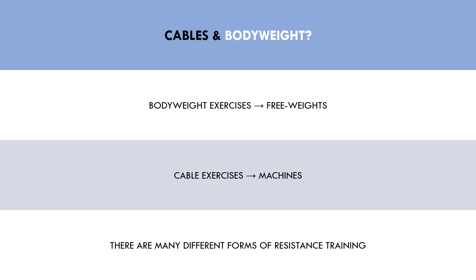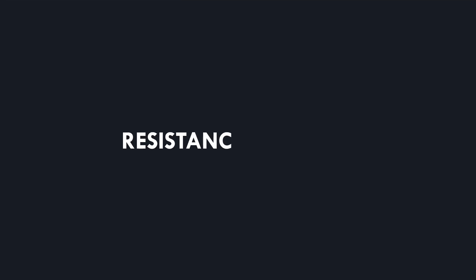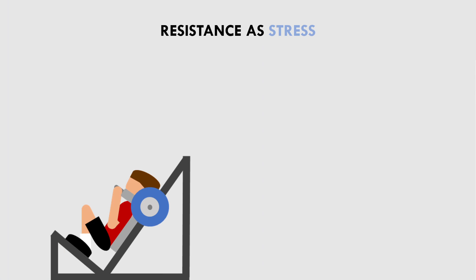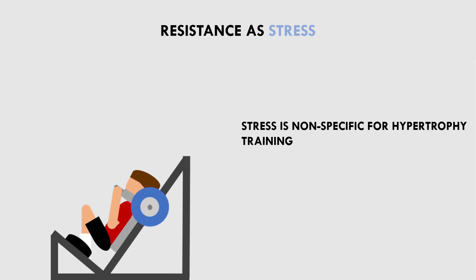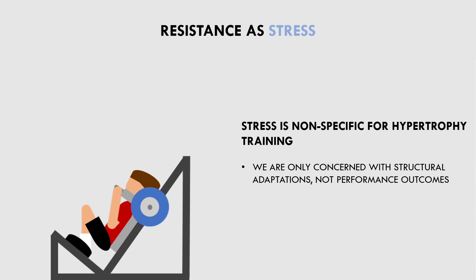Before comparing free weight and machine exercises, we first need to understand that resistance training is simply a stress to the muscle. Our muscles don't know what form of resistance we are applying — they simply recognise it as stress. For strength training, exercise specificity becomes more of a concern because it is a performance outcome. Although for hypertrophy training, we are only concerned with structural adaptations. Therefore, there are no mandatory exercises for hypertrophy training; there are many different ways to stress the muscle and therefore induce muscle growth.